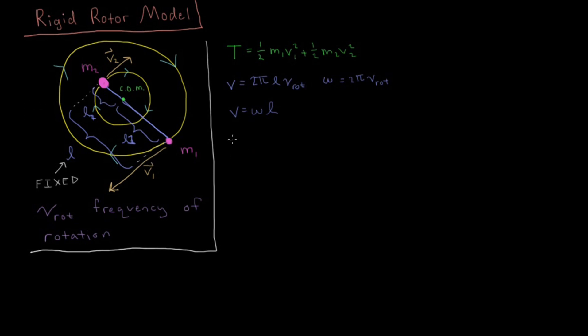We can now say that kinetic energy T equals 1/2 m1 L1² omega². It's going to be the same omega for both of them. Because we have v squared, we square that and get omega² L². Same thing for the second atom: 1/2 m2 L2² omega².